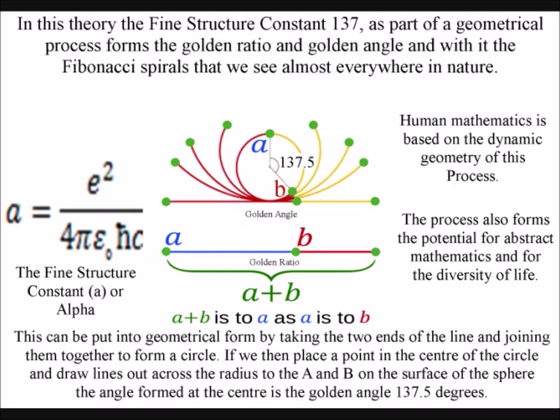If we then place a point in the centre of the circle and draw lines out across the radius to the A and B on the surface of the sphere, the angle formed at the centre is the golden angle, 137.5 degrees.